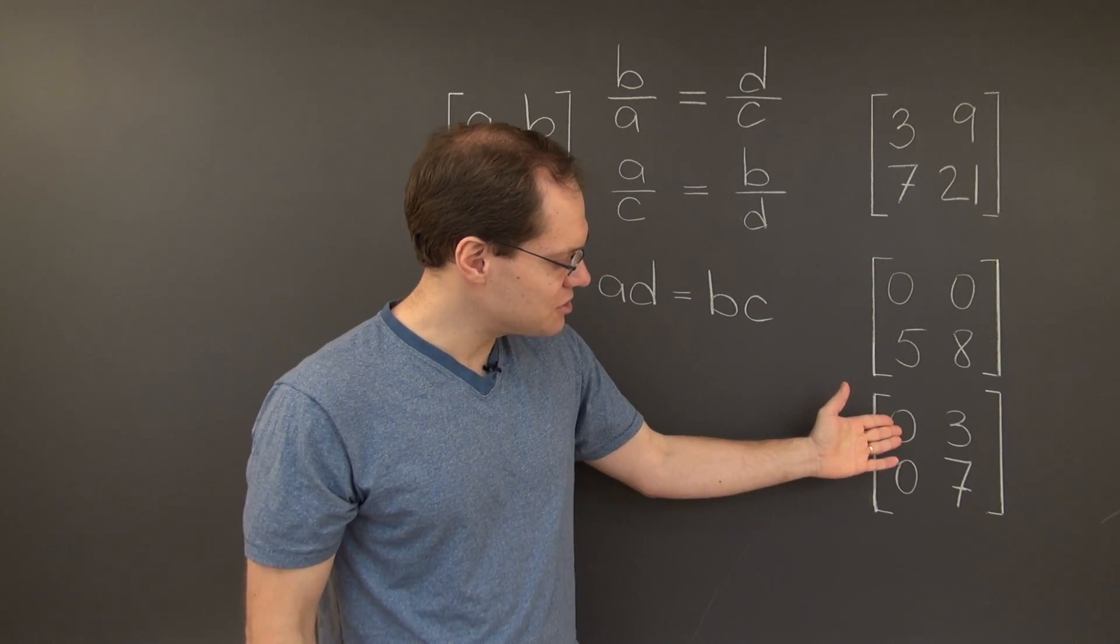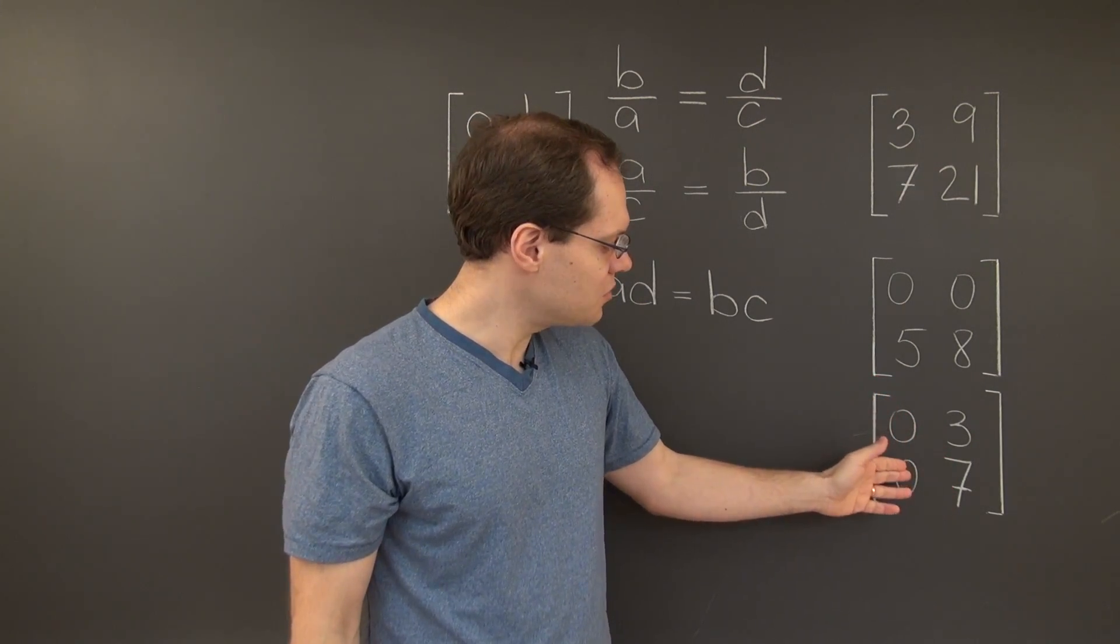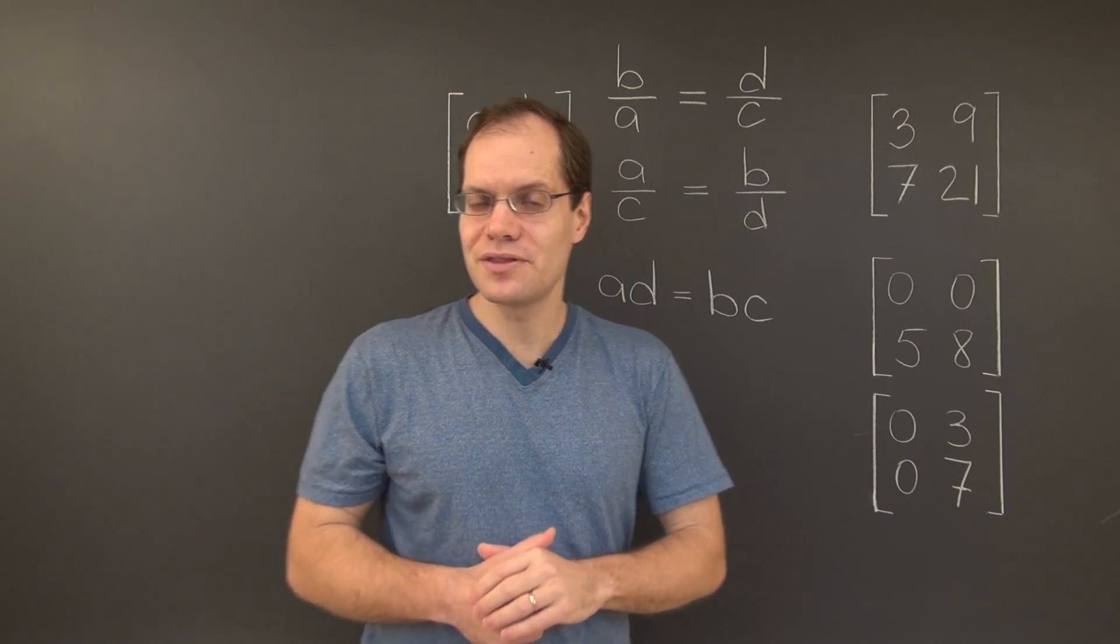In the case of the last matrix, we once again have 0 times 7, equals 3 times 0, we get 0s in both cases.